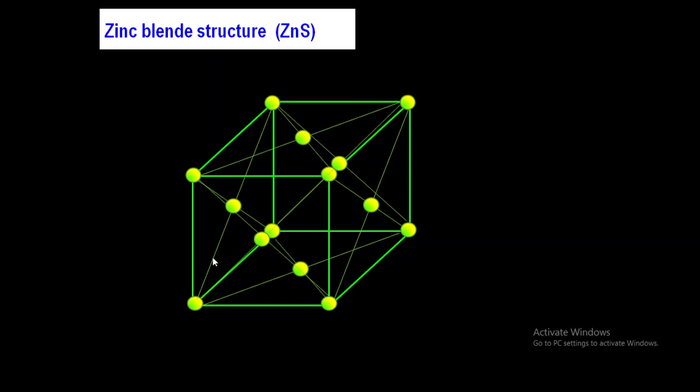Now, what about the zinc ion? Zn²⁺ ions are present along the body diagonal. We already studied how to construct a diagonal in a cubic structure. By joining two corners — one at a front corner and one at a back corner — and by joining four front corners and four back corners, we can construct four diagonals in a cubic unit cell.